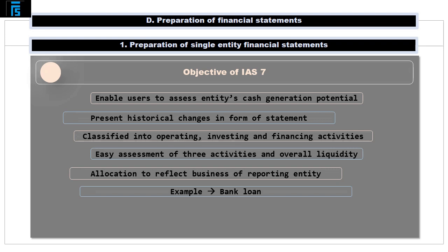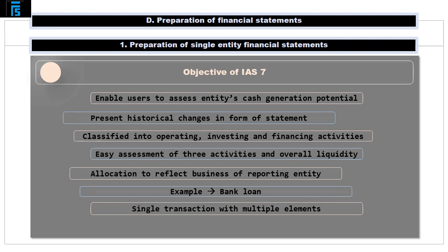It should also be stressed that a single transaction may comprise elements of cash flows which are classified differently — for example, a loan repayment which includes both a capital and an interest element. In such a case, the capital repayment must be shown under cash flows from financing activities, whereas the interest portion may be reported as an operating or financing cash flow.